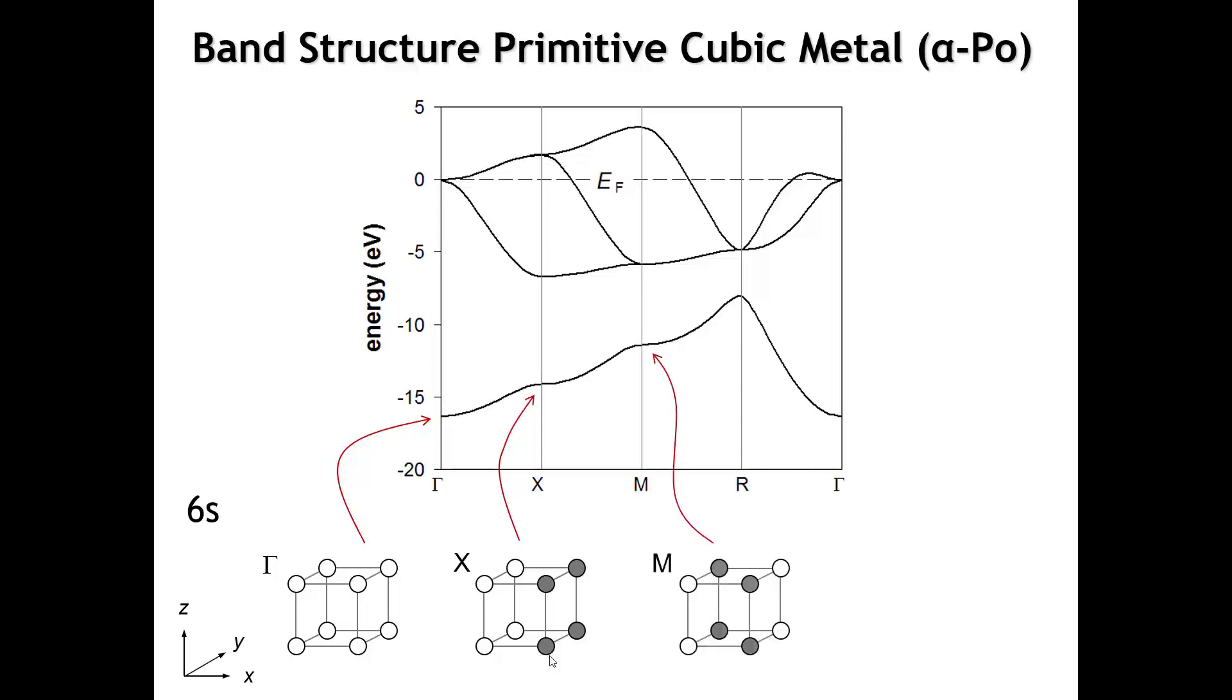When we go to M, the phases of the orbitals change every time we translate a unit cell vector in either the X or the Y direction. The four nearest neighbors in the XY plane are all anti-bonding, but the two nearest neighbors in the Z direction are still bonding. So this is more anti-bonding than bonding and higher energy still.